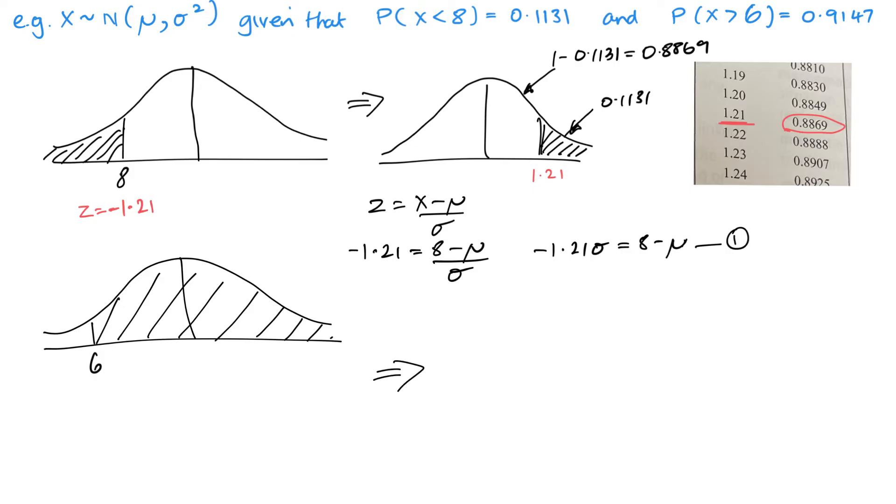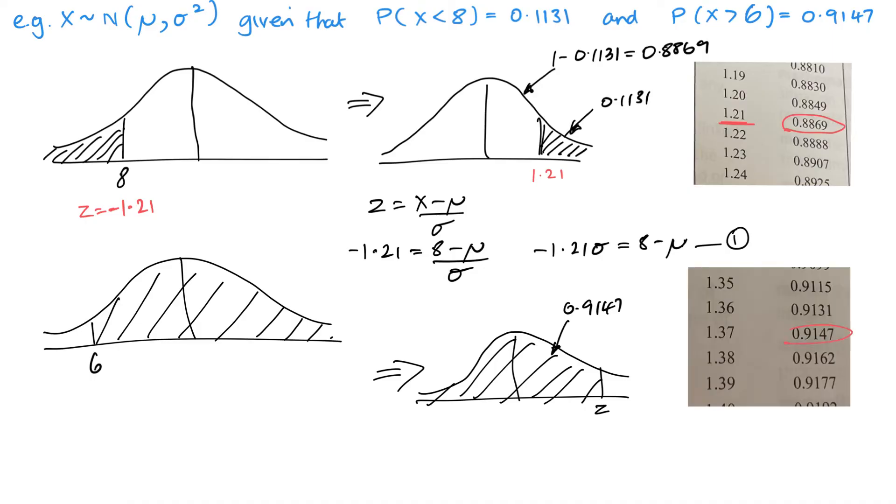Now looking at my second equation, again we need to look at the mirror image of this. And this area is 0.9147, so it does mean we can look this straight up in our tables. So here we can see it, 9147. So Z value here is 1.37. Now I must remember that this is a negative Z because the original is on the left. And then using my Z formula, we get minus 1.37 equals 6 minus the mean over the standard deviation, or minus 1.37 times the standard deviation is equal to 6 minus the mean, and this is our second equation.